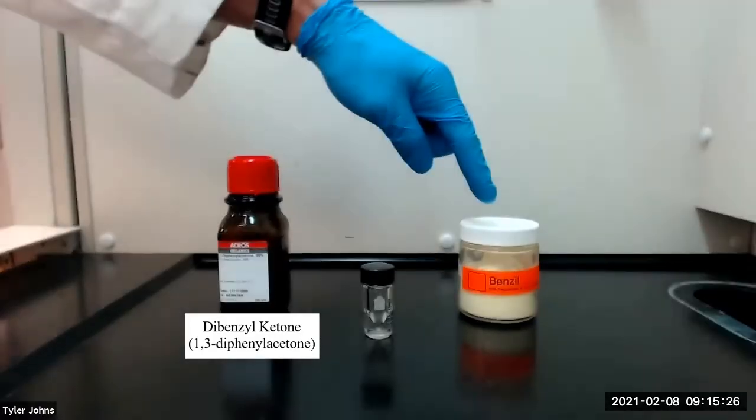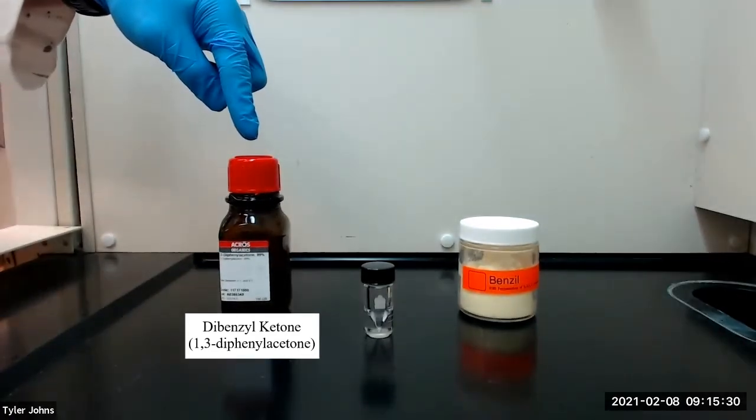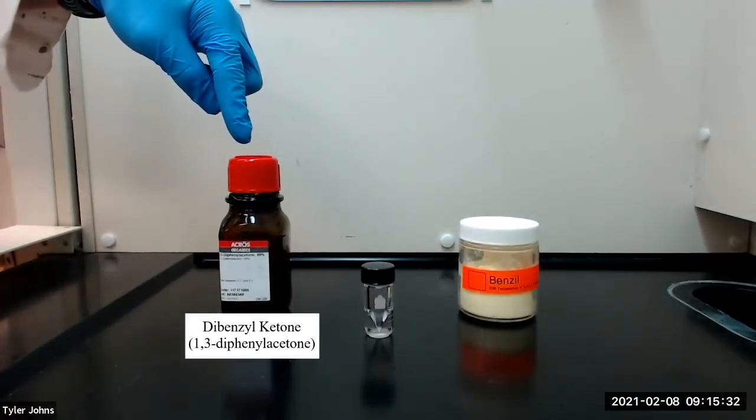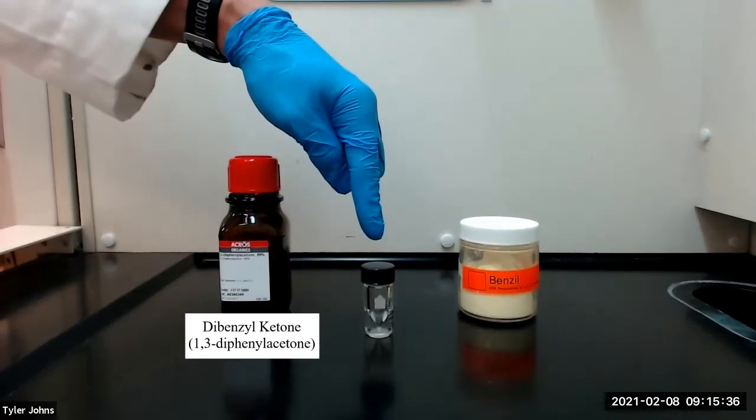To begin, we will add 0.1 grams of benzyl and 0.1 grams of dibenzyl ketone, or 1,3-diphenylacetone, to a 3-milliliter conical vial.